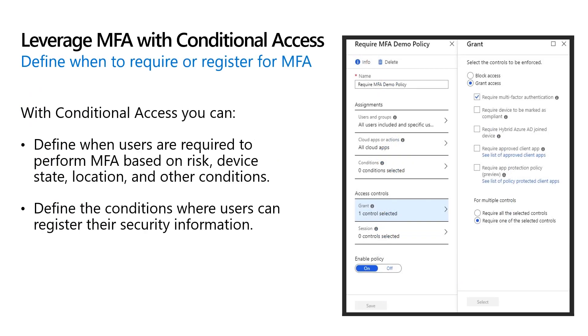The best way that you can leverage MFA is using conditional access. Conditional access has two parts: assignments and access controls. Assignments define who is in scope of the policy and under what conditions, while access controls define what requirements the user must complete in order to be granted access. By leveraging conditional access, you can create policies that granularly define the who, when, and where of requiring MFA based on risk, device state, location, and other factors.